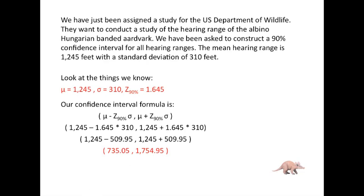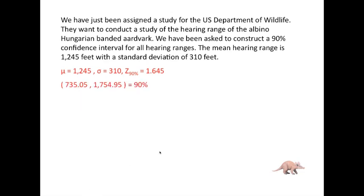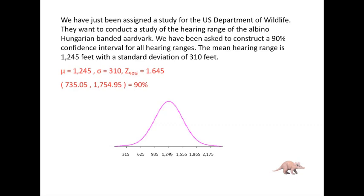This is really cool stuff. Here we have the things we know and we have our 90% confidence interval. Do you recognize this curve? This is a normal distribution with a mean of 1,245 and a standard deviation of 310 feet. We're looking at this lower bound, which is right here, and this upper bound, which is right here, which catches 90% of the data.